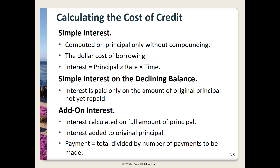The most common method of calculating interest is the simple interest formula. Other methods — simple interest on declining balance and add-on interest — are variations of this formula. Simple interest is computed on principal only, without compounding; it's the dollar cost of borrowing, calculated as: Interest = Principal × Rate × Time. With simple interest on the declining balance, interest is only paid on the remaining principal. With add-on interest, interest is calculated on the full amount of principal, and the payment equals the total amount divided by the number of payments.